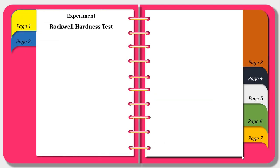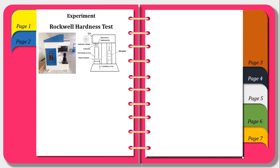Now moving on to the experiment Rockwell Hardness test. Hardness is the property of material by which it offers resistance to scratch or indentation. The aim of the experiment is to determine the Rockwell Hardness number of a given specimen.